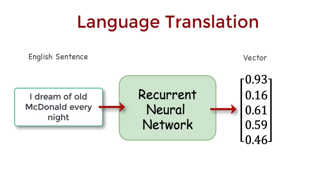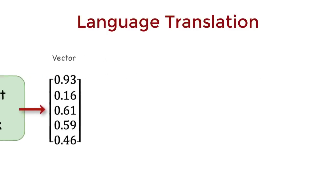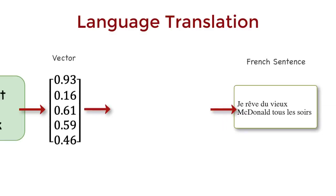So we took our English sentence, and with recurrent neural network, we converted it into a vector. Now we need to convert this vector into a French sentence.